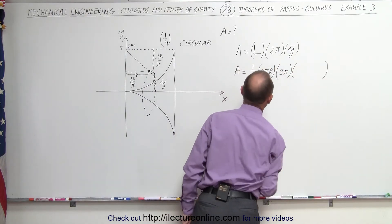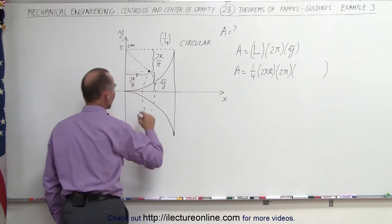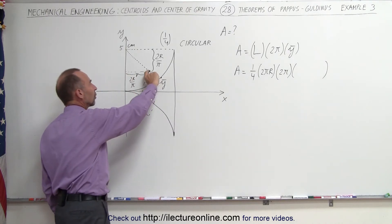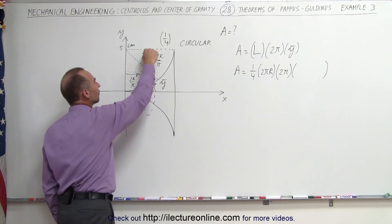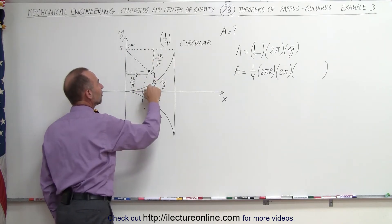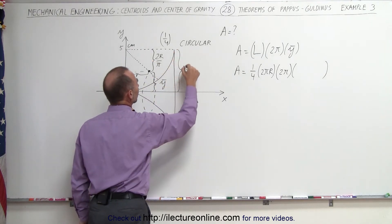But now we have to figure out what the distance of the centroid is or what the y-coordinate of the centroid is. It will be the total distance 5 centimeters, the radius, because this here is the radius of the circle.